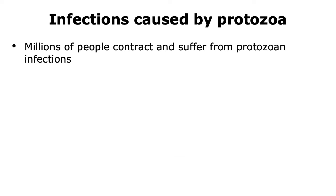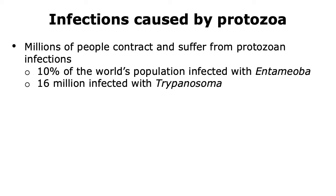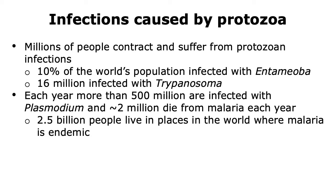Protozoans are a significant source of disease as millions of people contract and suffer from infections caused by protozoa. For example, 10% of the world's population is infected with the protozoan Entamoeba histolytica. On the other hand, 16 million are infected with the protozoan Trypanosoma. Each year, more than 500 million are infected with Plasmodium, which causes malaria, and of those 500 million, approximately 2 million die every year. In fact, 2.5 billion people live in places where malaria is endemic.